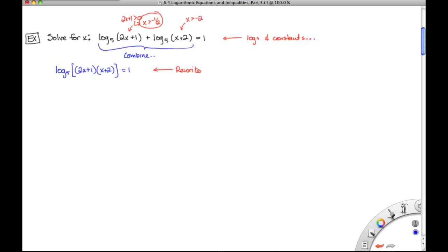So if we were to rewrite this as an exponential, we know that the argument 2x plus 1 times x plus 2, the term on the inside of the log, has to be equal to our base 5 raised to the power of, in this case, 1. And if we clean this mess up a little bit, we'll see that we'll multiply out the left, so 2x squared plus 5x plus 2 is equal to 5. And since we've got a quadratic, we can imagine that we're going to have to solve this using standard means for solving quadratics. So let's go ahead and set this equal to 0. And we'll have 2x squared plus 5x minus 3 is equal to 0 after we subtracted the 5 from both sides.